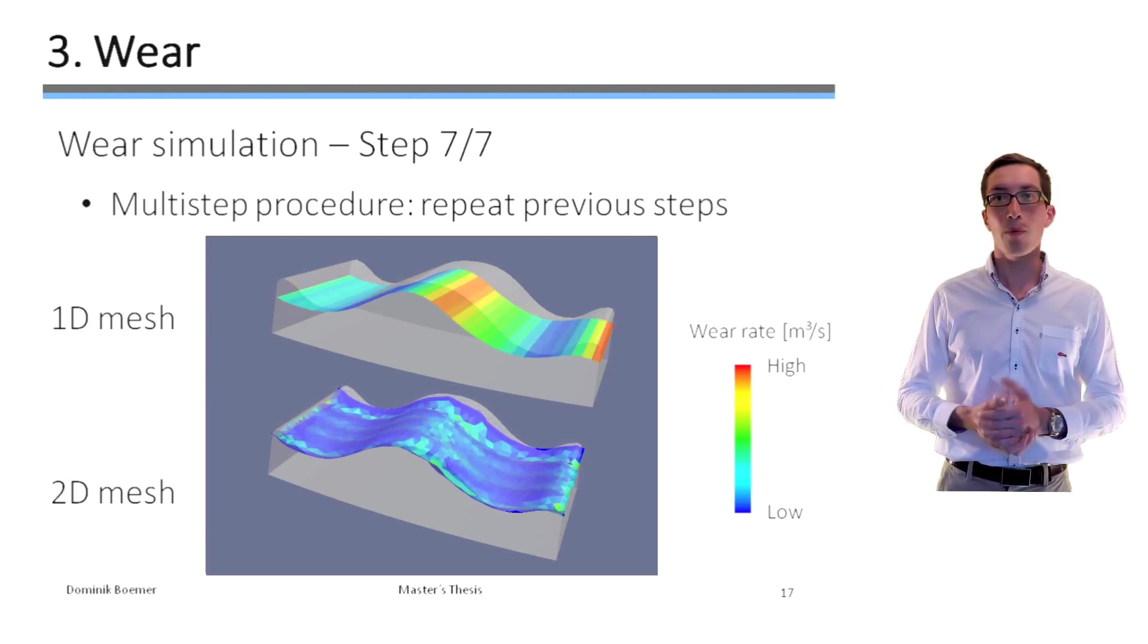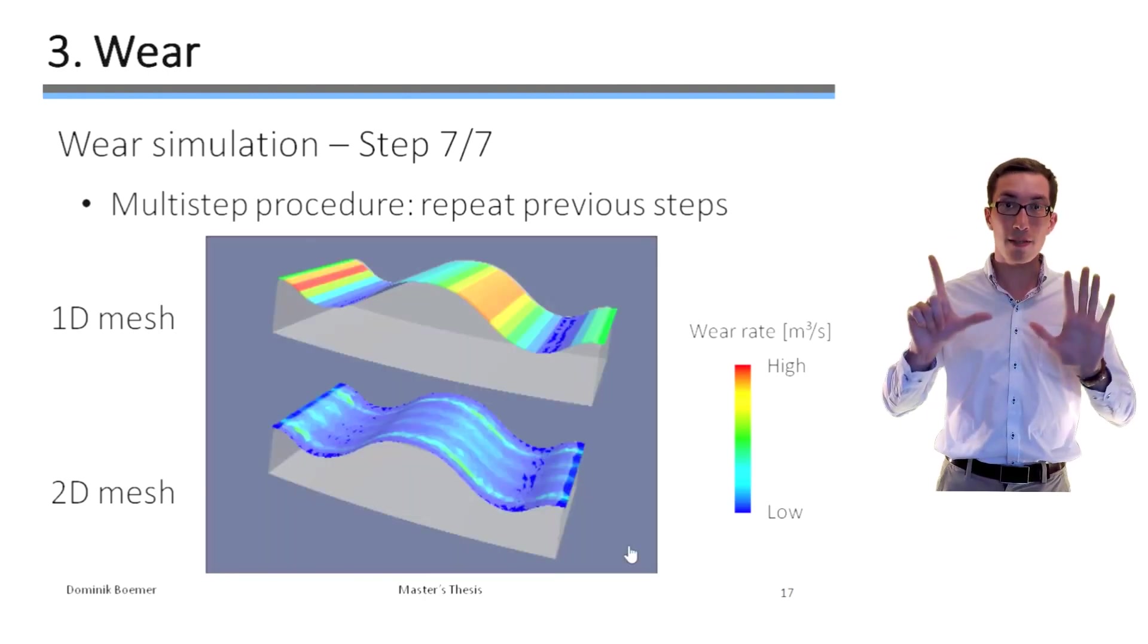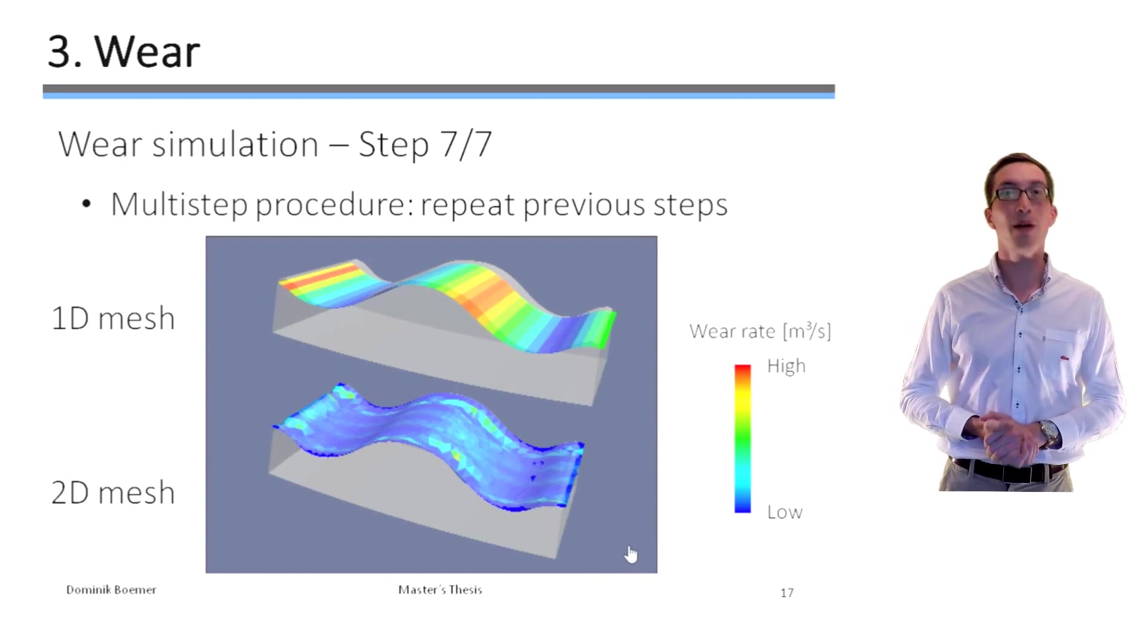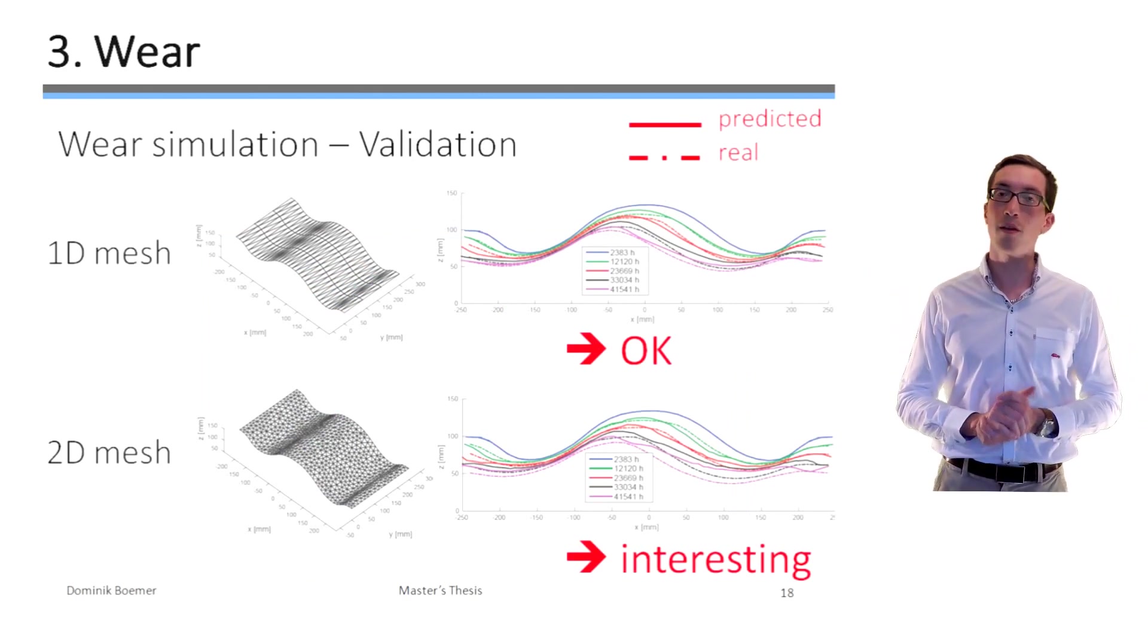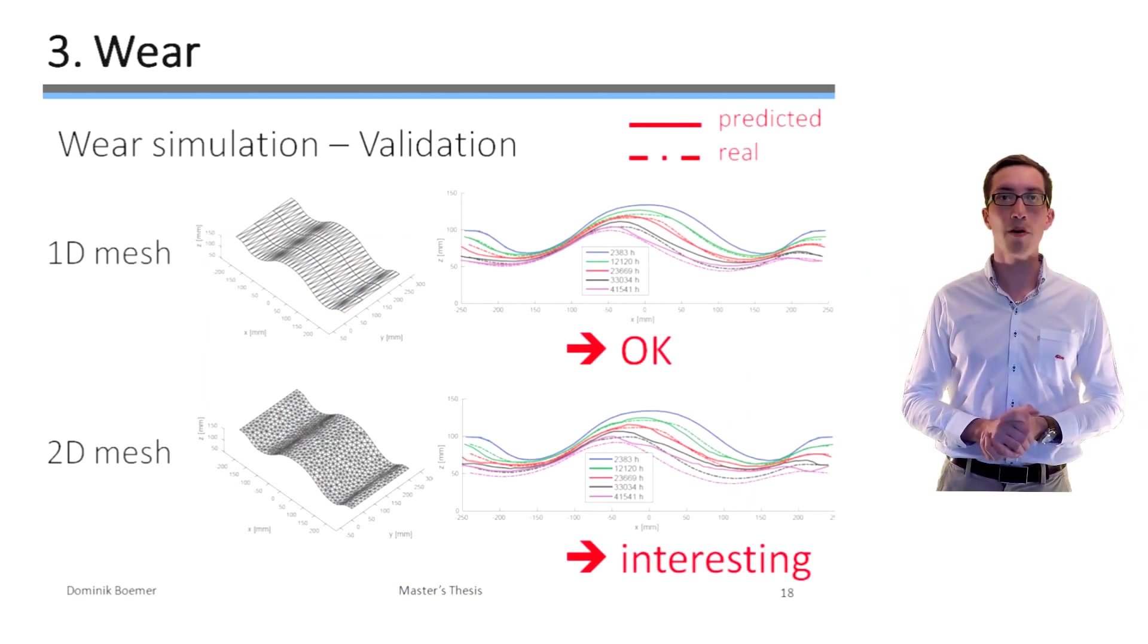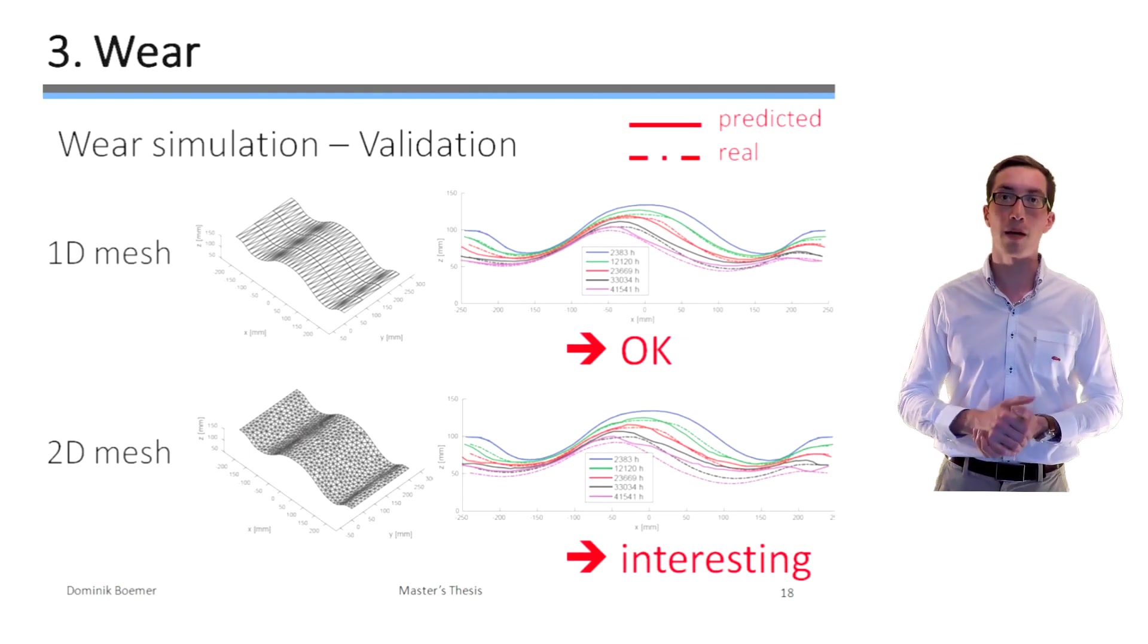So now we know how the wear simulation works in seven steps and maybe you might be wondering if the predicted results are realistic. So therefore, this slide shows the liner wear evolution. The solid line is the predicted wear profile and the dashed line the real wear profile.